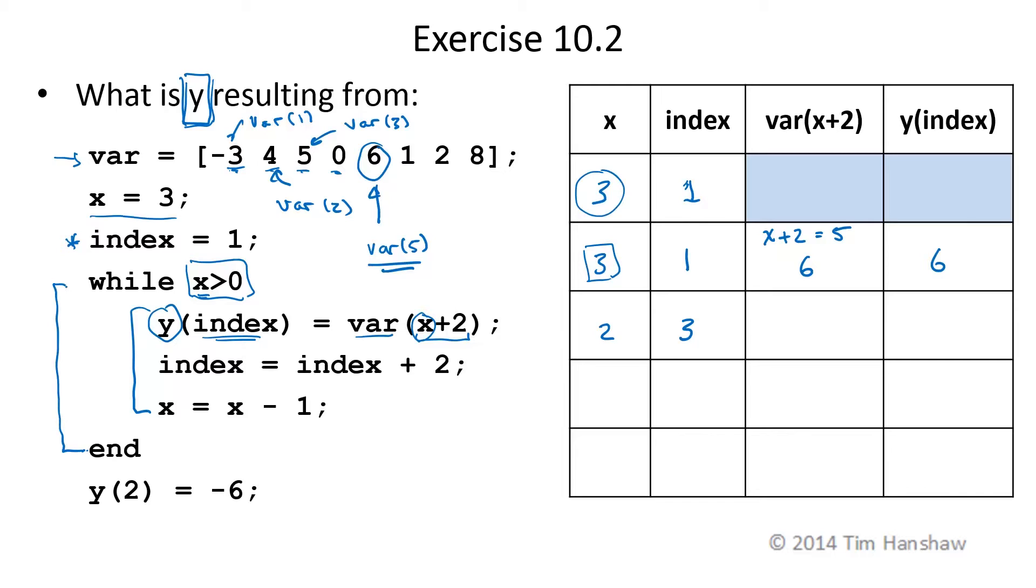We encounter the end statement. We go up to the while statement and recheck this value. So we need to find out if X is greater than 0. 2 is greater than 0. So we're going to enter this while statement and do this stuff again. So var of X plus 2. X is 2. So this would be X plus 2 is 4.